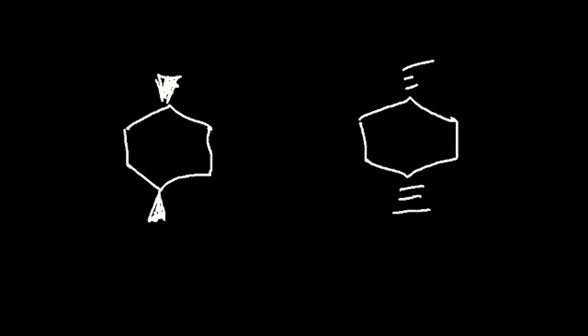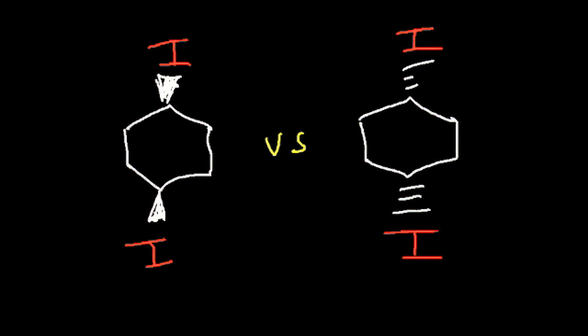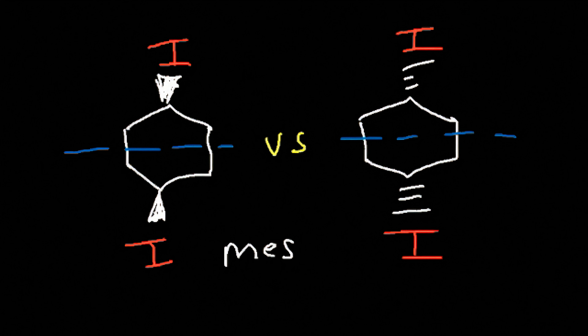Let's try another example. Describe the relationship between these two molecules. Notice that we have a plane of symmetry in both molecules, and the chiral centers do indeed change. So it can't be enantiomers due to the plane of symmetry. Therefore, these two are meso compounds — they are identical to each other.